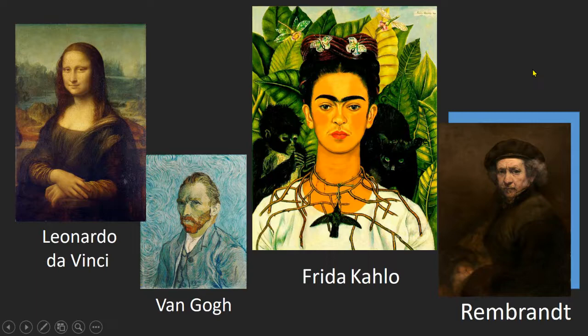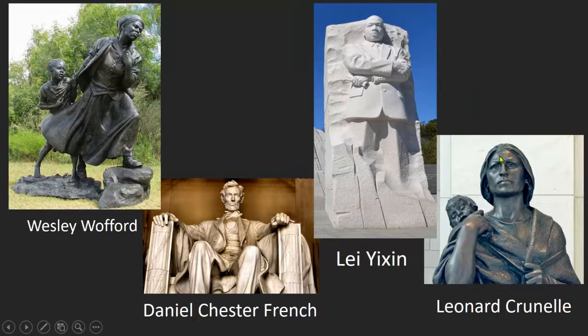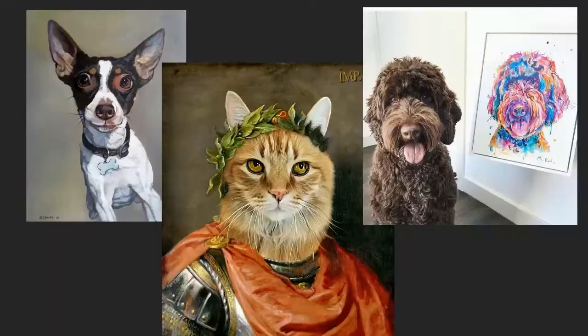They really look like the person. Here are some sculpture or statue portraits of famous people: Sacagawea, Martin Luther King, Abraham Lincoln, and Harriet Tubman. These are pretty realistic portrayals through sculpture of famous people throughout history that various artists created.